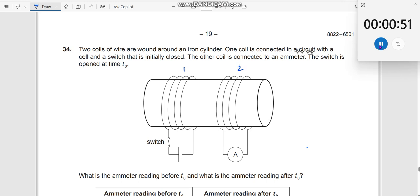One coil is connected in the circuit with a cell and a switch that is initially closed. Initially, it is already closed. That means there is a current which has already been flowing through it.